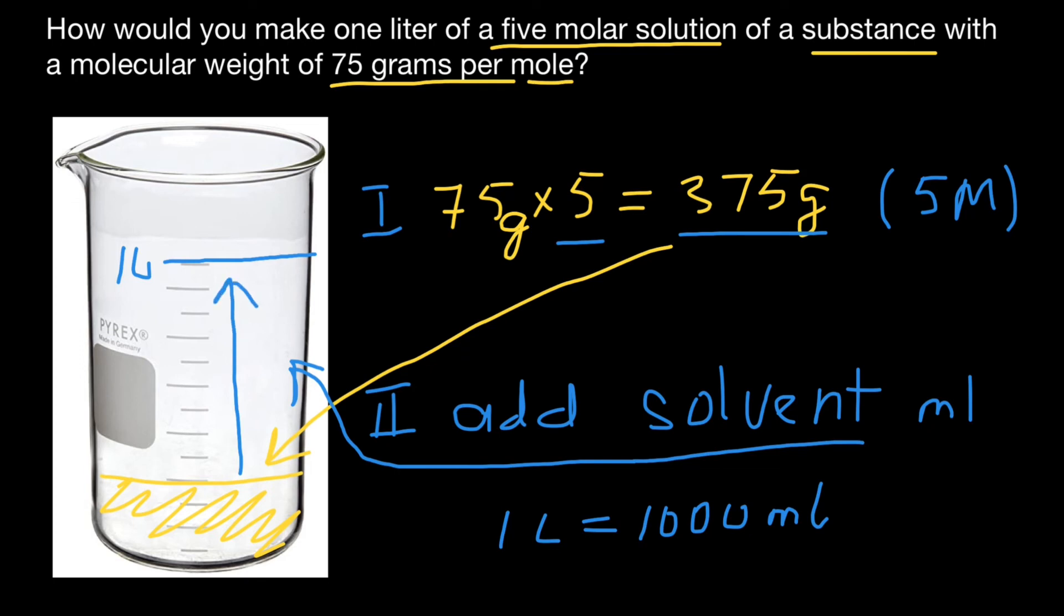And this is how we are going to get one liter of five molar solution. One more step here can be to stir solvent and solute in order to get homogeneous liquid. Then again, check the volume. And if needed, you can also add solvent in order for the line to be exactly at one liter or 1000 milliliters.